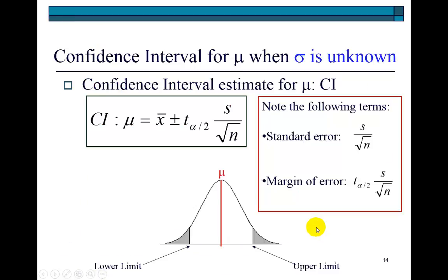To calculate the confidence interval estimation for the population mean mu, the definition is the same, except that here we're going to use T instead of Z, and we're going to use the sample standard deviation S calculated from the sample instead of sigma.